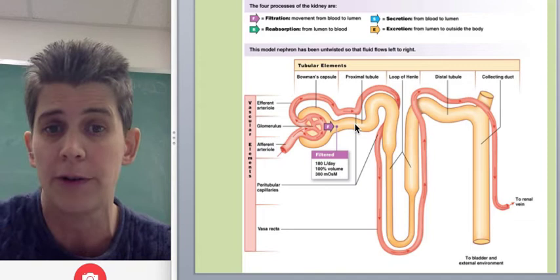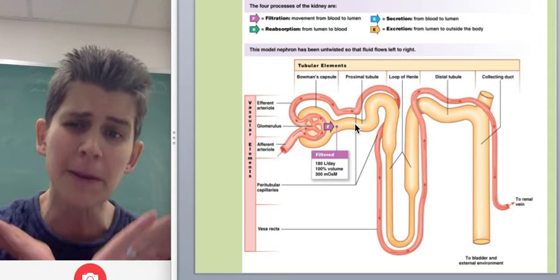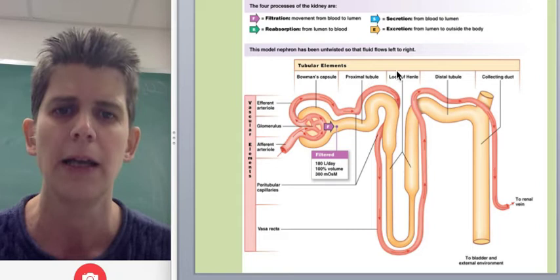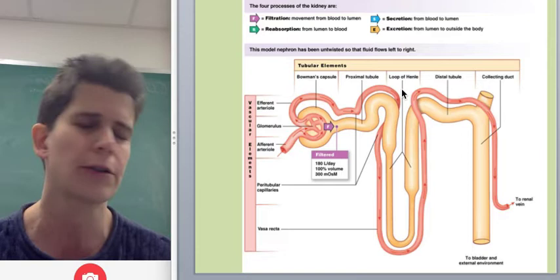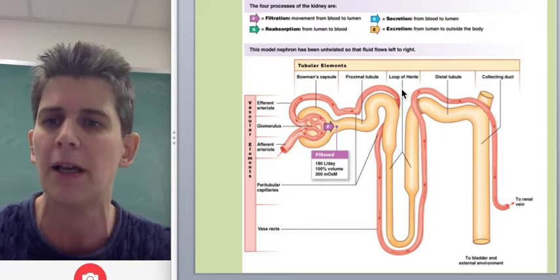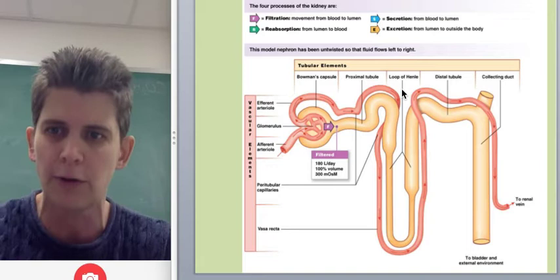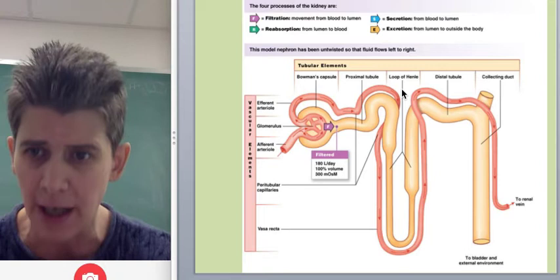Now the way you want to think of a nephron is having two functional parts. The left half on this picture, or the first half as the fluid flows, is completely unregulated. So this proximal tubule, which is the first place the fluid gets, and then the loop of Henle, are never affected by what your blood pressure is, by how much salt's in your blood, by how dehydrated you are. The same thing happens in them all the time, and students often get confused about this, and think that the loop of Henle only makes fluid concentrated when we need it to. No.